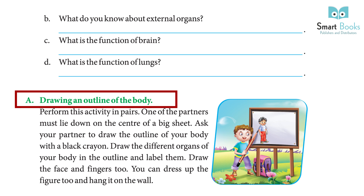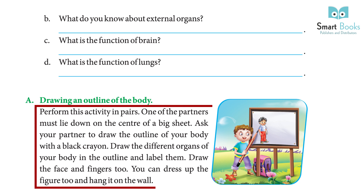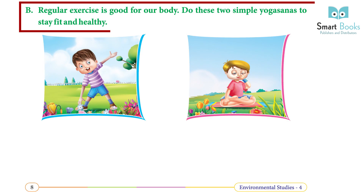Activity A: Drawing an outline of the body. Perform this activity in pairs. One partner must lie down on the center of a big sheet. Ask your partner to draw the outline of your body with a black crayon. Draw the different organs of your body in the outline and label them. Draw the face and fingers too. You can dress up the figure and hang it on the wall. Activity B: Regular exercise is good for our body. Do these two simple yogasanas to stay fit and healthy.